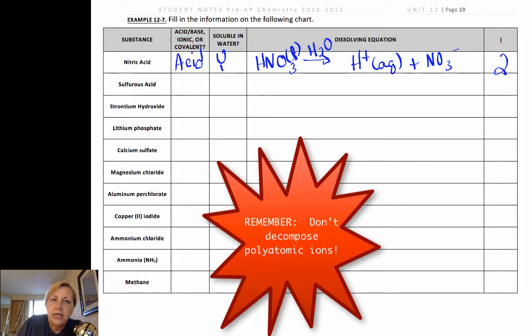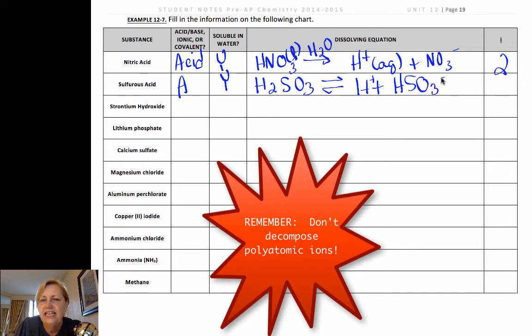If I have sulfurous acid, this is also an acid. Acids by definition go into water. Sulfurous came from sulfite and I get H2SO3. Since it is a weak acid, I'm going to use a double arrow and I'm just going to take the first H+ off. And I'm going to put HSO3-. I is actually going to be probably less than two on this one.